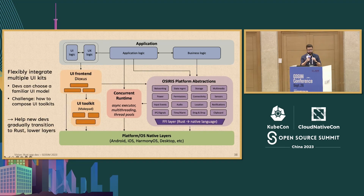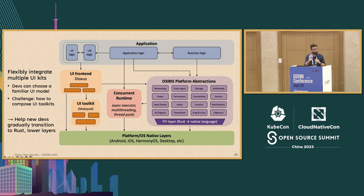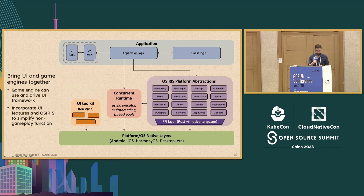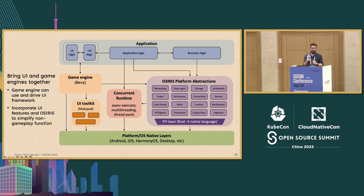We also want to explore the ability to flexibly integrate one or more different UI toolkits, such that the developer can choose whatever UI model they're most familiar with. If you're coming from React Native, maybe it's easier to get started with Dioxus. This can lessen the steepness of the learning curve that new developers often face with Rust. We're even interested in bringing together UI and game engines, something like Bevy, such that the game engine could be in control of the main application flow and sporadically incorporate UI components or OSIRIS components to implement non-gameplay functionality in a simpler manner.